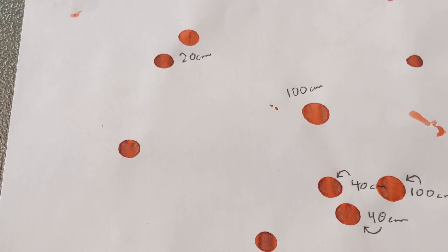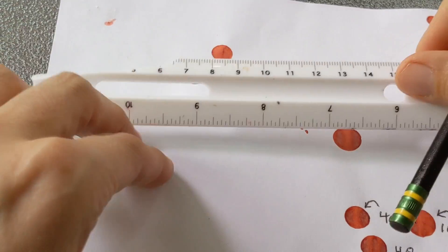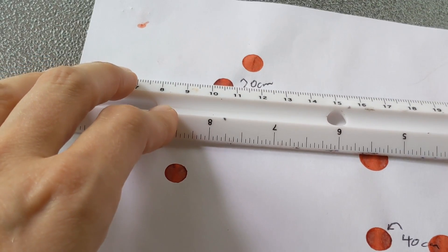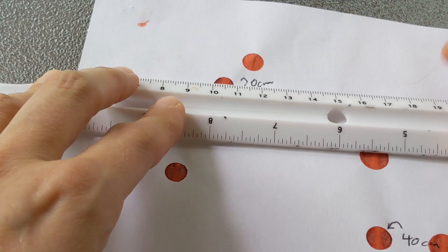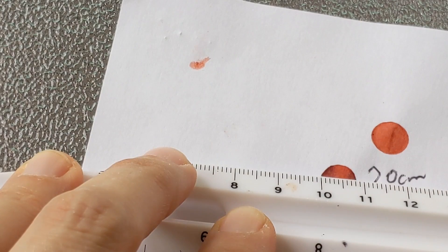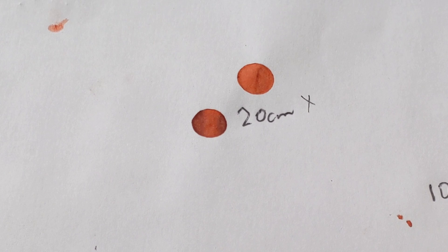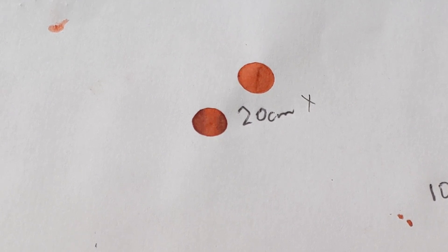I do have another one that's at 20 centimeters, so I will measure that one next because just because they fell from the same height does not mean they're going to have exactly the same diameter. This one does appear to have that same diameter of 8 millimeters, however. Since that data point will be in the same place, I don't need to record it because it would just overlap.